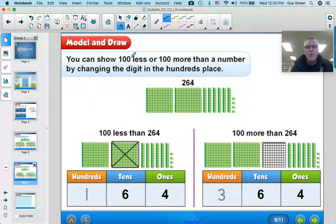All right, you can show 100 less or 100 more than a number by changing the digit in the hundreds place. So the digit in the hundreds place for this number is 2. So 264, same drawing that we looked at last time. But to do 100 less than 264, we're just going to cross off one of the hundreds. So now we just have 1 hundred, and then 1, 2, 3, 4, 5, 6 tens, and 1, 2, 3, 4 ones. So 100 less than 264 is 164.